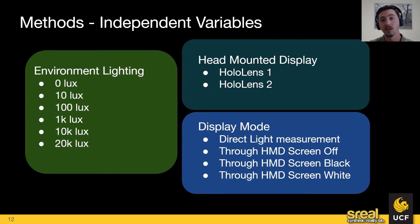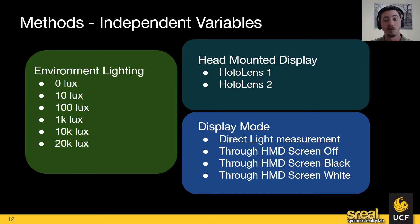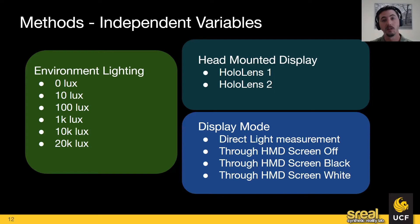We set up several conditions. We had six different levels of lighting achieved by dimming that daylight lamp, between 0 lux and 20,000 lux. We used two different head-mounted displays — the HoloLens 1 and the HoloLens 2 — chosen based on their availability at our lab. We then made four different sets of measurements for each combination of conditions: first, a direct measurement of the light to establish the illuminance coming from the lamp, and then the headset powered off to see how the tint was reducing incoming light.